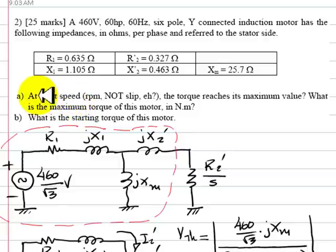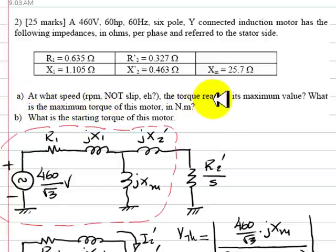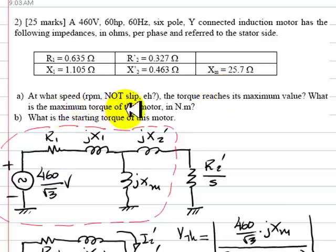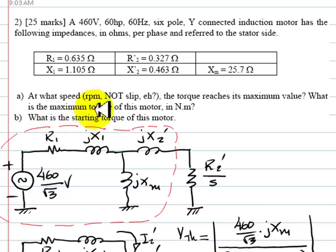Part A of the question asks: at what speed in RPM do we have maximum torque, and what is that maximum torque in newton meters? The second part asks: what is the starting torque of this motor? Let's begin.